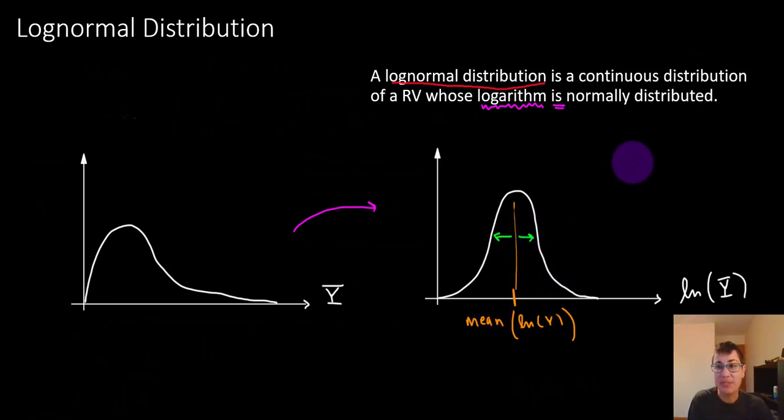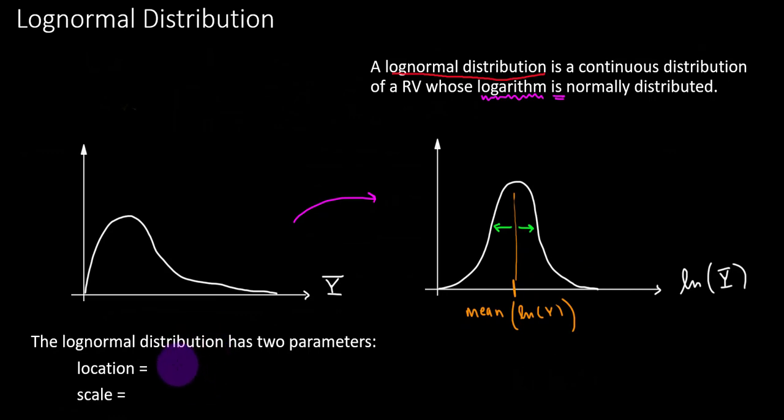Kind of like how when we say a normal distribution, we look at the mean and standard deviation. Those are the two parameters that apply to a regular normal distribution. We're going to look at two parameters that apply to the log-normal distribution. These two parameters are the location and scale.